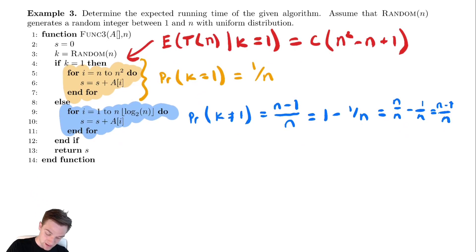And the expected runtime of this code down here, the expected runtime given that k is not equal to one, is c n log n. Now we need to compile this information into something useful.